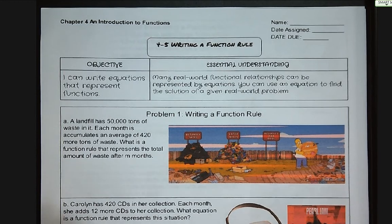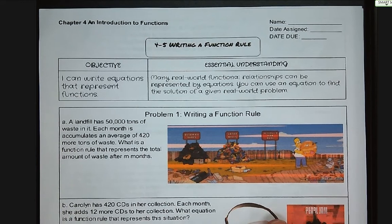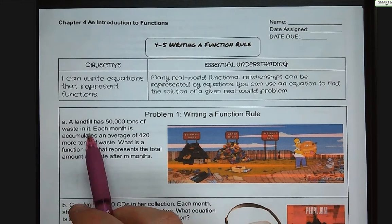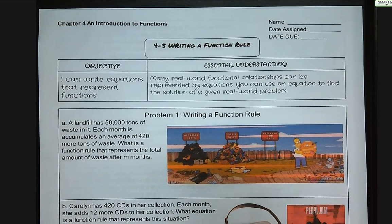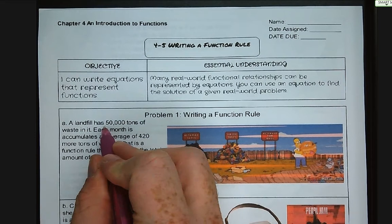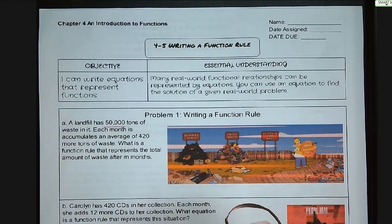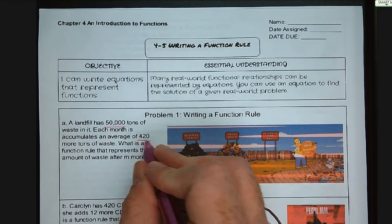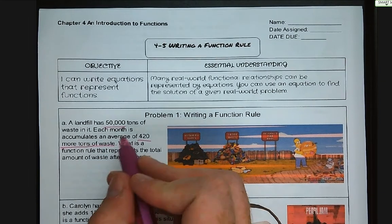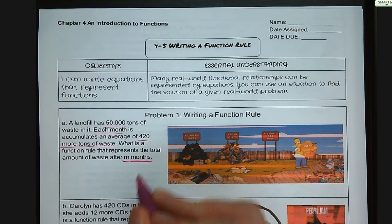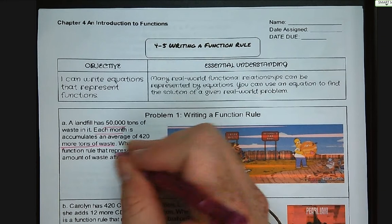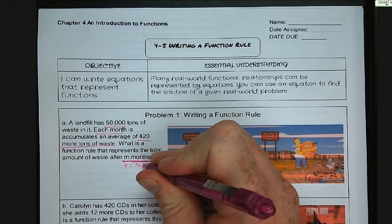So let's dive in and start off with problem number one, writing a function rule. Letter A: a landfill has 50,000 tons of waste in it. Each month it accumulates an average of 420 more tons of waste. What is a function rule that represents the total amount of waste after m months? So important pieces of information: we already have 50,000 tons of waste in this landfill, and we are adding 420 more tons of waste each month. We want to write a function rule relating to m months.